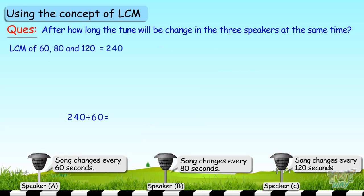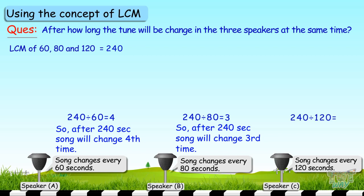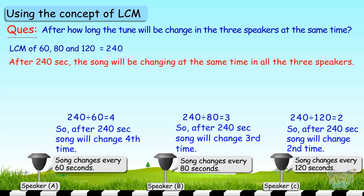240 divided by 60 equals 4, so speaker A will change its tune 4 times. 240 divided by 80 is 3, so speaker 2 will change 3 times. And 240 divided by 120 means the song in speaker 3 will change 2 times. So after 240 seconds, the music will be changing at the same time in all three speakers. You need to use the LCM to solve these types of problems.